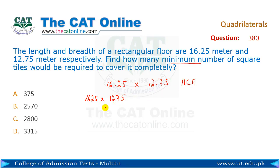We find the HCF of 1625 and 1275. Dividing, the highest common factor is 25, so the tile size is 25 centimeters.